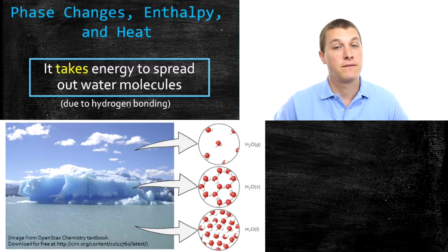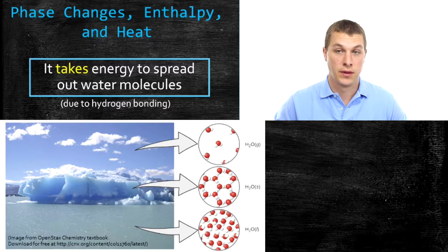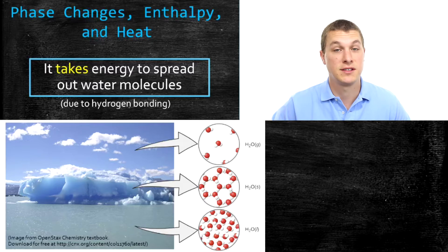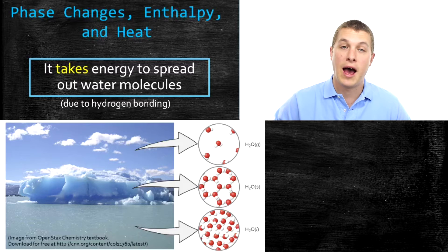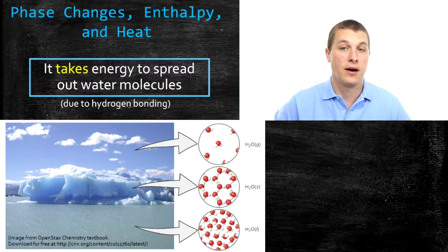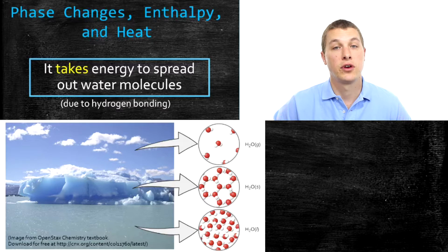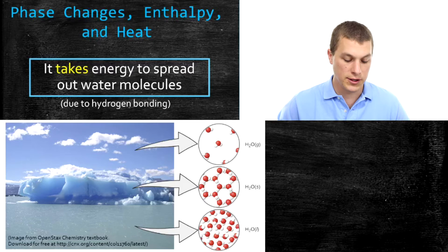Welcome to Real Chemistry. Today we're going to be talking about phase changes and the enthalpy associated with those phase changes. First, we'll talk about the phase changes and what enthalpy means in the context of phase changes. Then in the second part of the video, we're going to do some calculations about how much heat is released or absorbed when different quantities of water undergo different phase changes. This is an important calculation for heating or cooling curves for water.